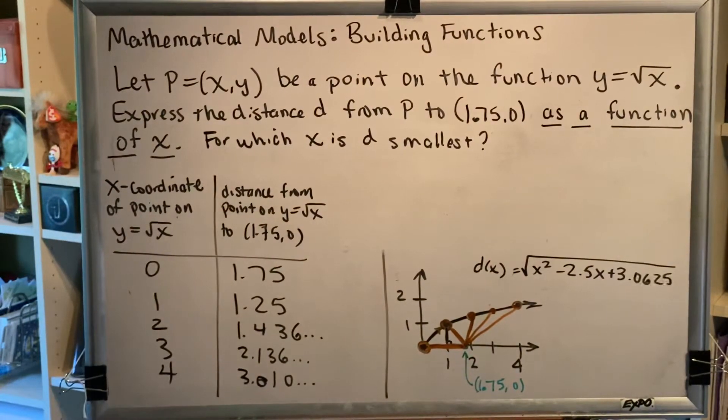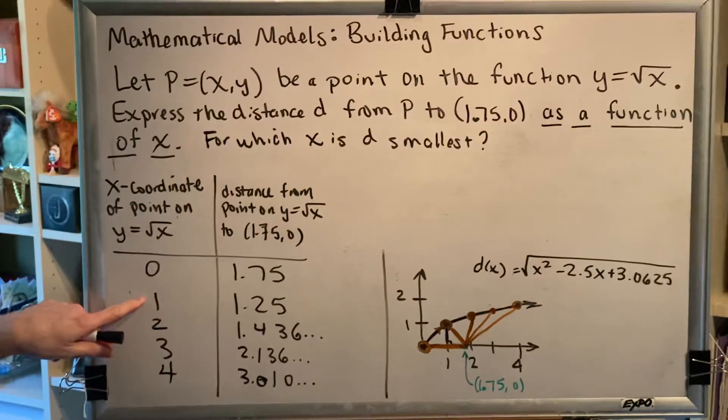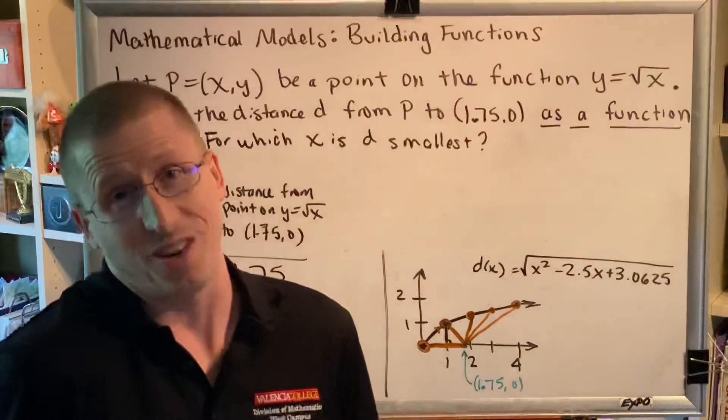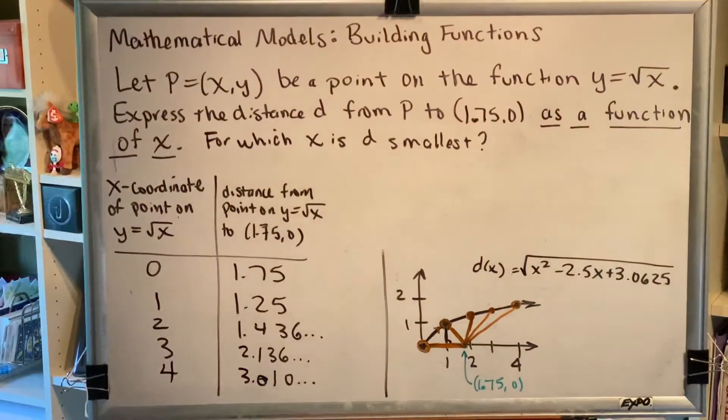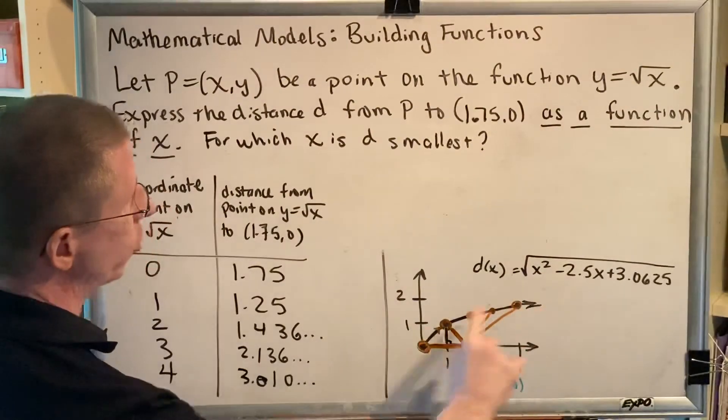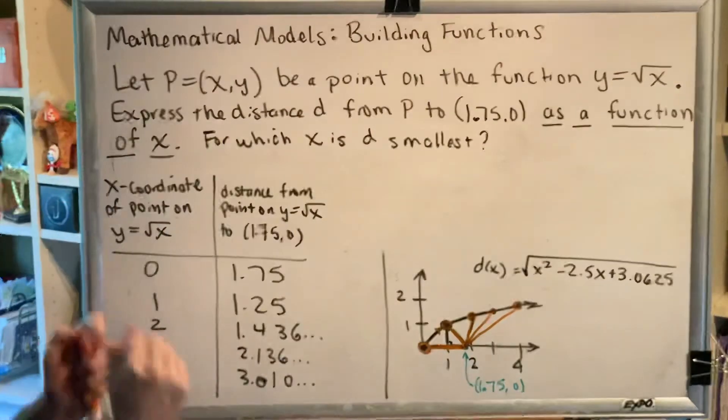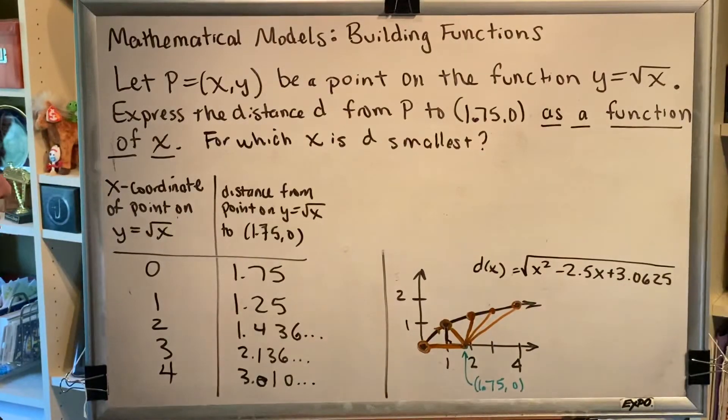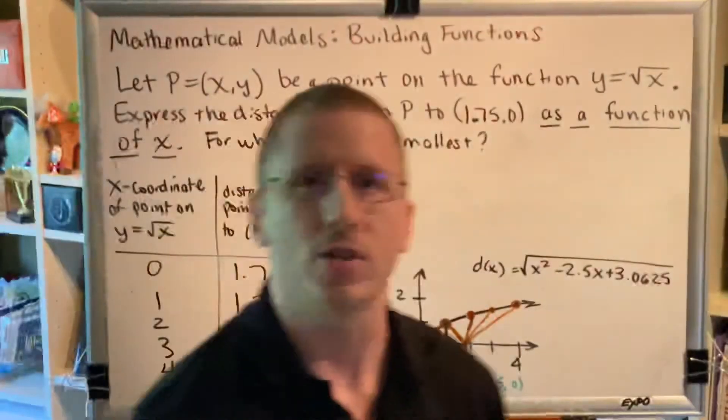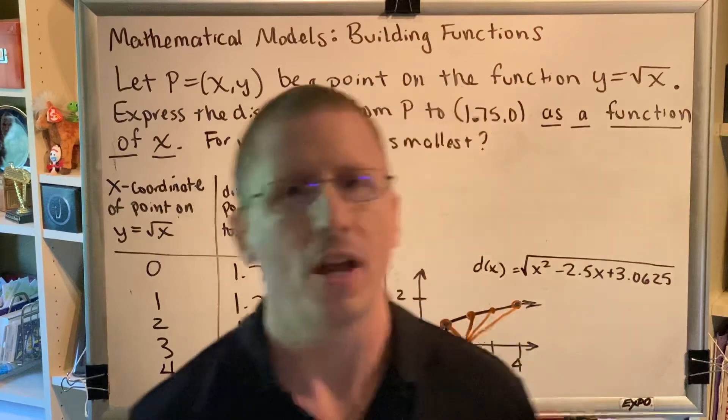But that would be overlooking the possibility that between and around the number 1 are other numbers like 1.1 or 0.8. So how do we find a mathematical way of showing where along the square root function we get the absolute smallest distance between the point on the square root function and (1.75, 0)? We're going to look at an animation in our next video.